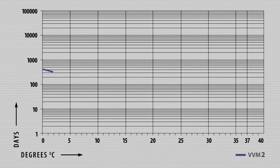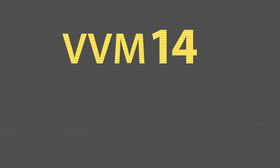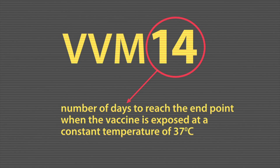The thermostability data of all vaccines can be matched in four VVM types defined as VVM2, VVM7, VVM14, and VVM30. The number characterises the number of days to reach the end point when the vaccine is exposed at a constant temperature of 37 degrees.